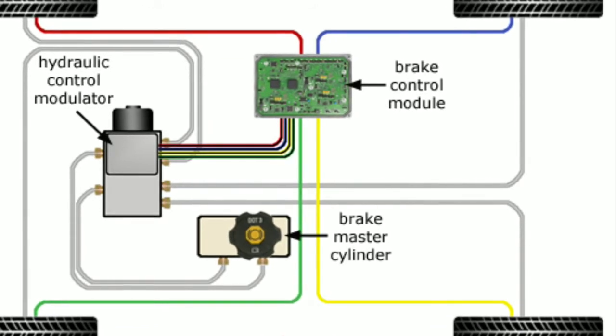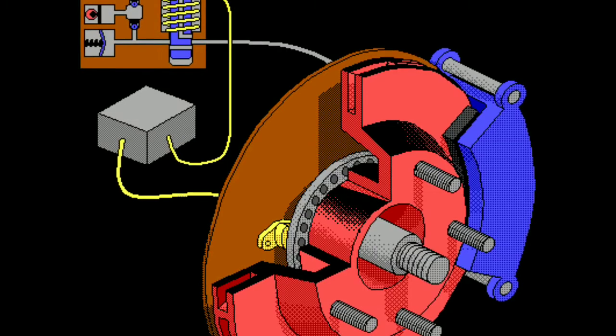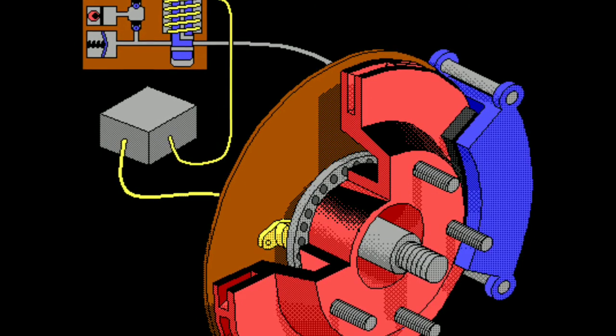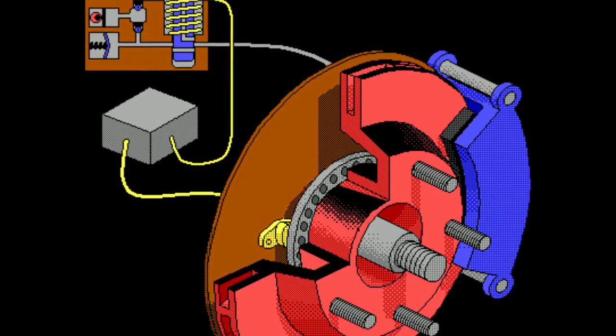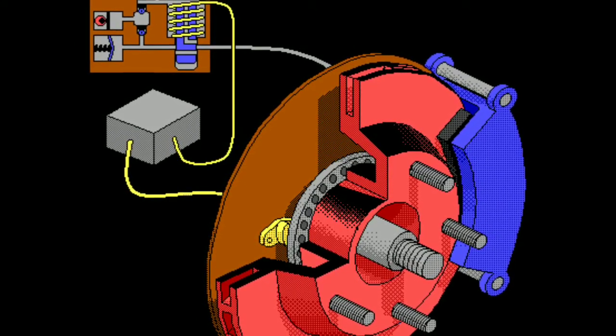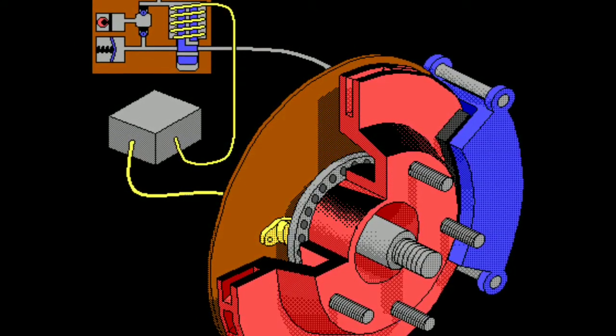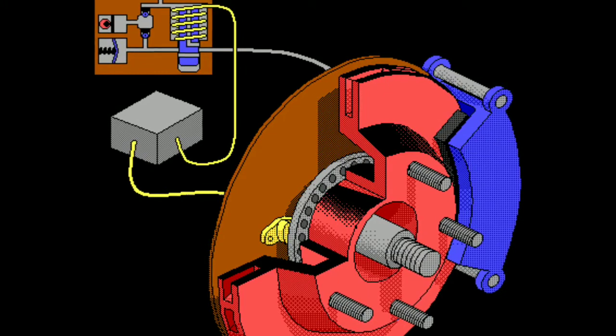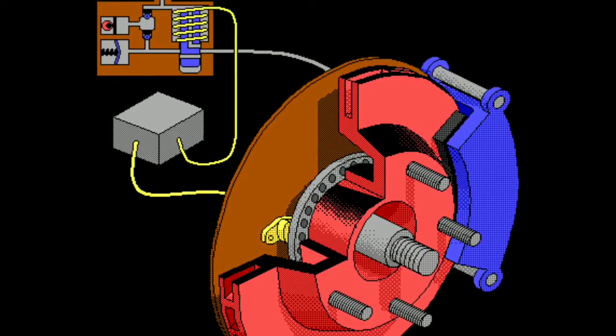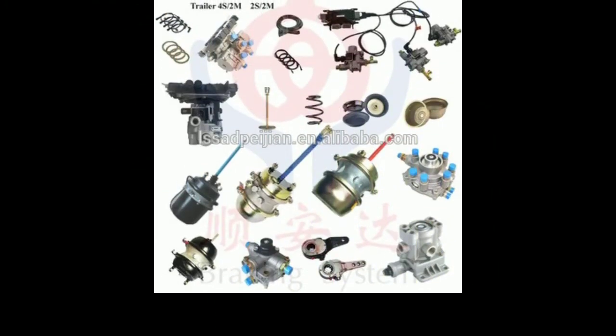ABS brake system parts. 1. Sensors. The main task of these sensors, which are on all wheels of the vehicle, is to detect locking in the wheels and transmit this information to the hydraulic control unit.